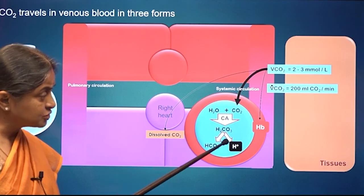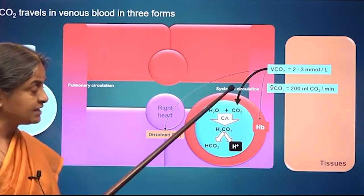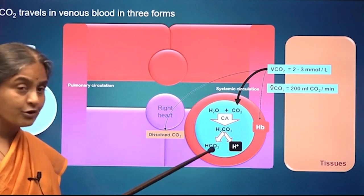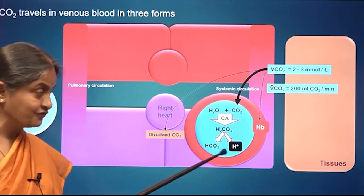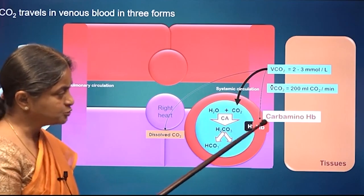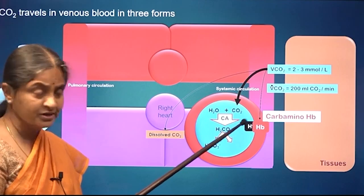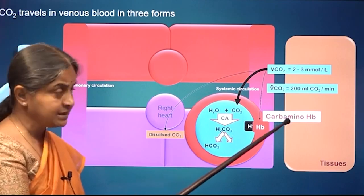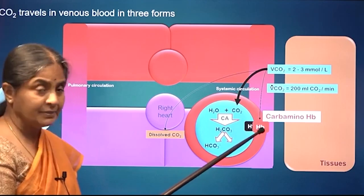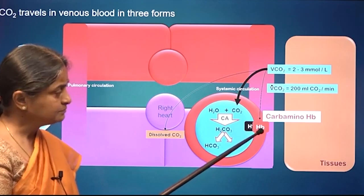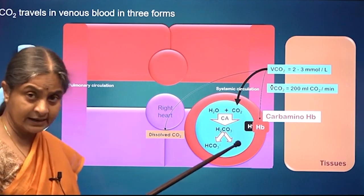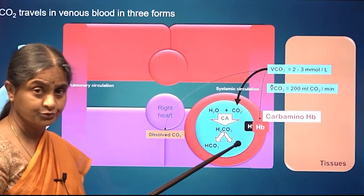If this reaction has to continue and all of the carbon dioxide that enters venous blood should be converted to these forms, then the end products have to be continuously removed. The protons bind to hemoglobin — this is what is referred to as reduced hemoglobin. Carbaminohemoglobin is different; that is carbon dioxide directly in combination with hemoglobin. The protons are buffered by hemoglobin and that is how they are cleared from the intracellular fluid without allowing the acidity to increase.